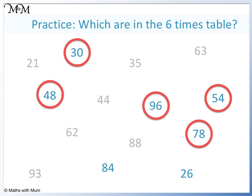84 is even. 8 plus 4 equals 12, so 84 is a multiple of 6. 26 is even, but 2 plus 6 equals 8. 8 is not a multiple of 3, therefore 26 is not a multiple of 6.